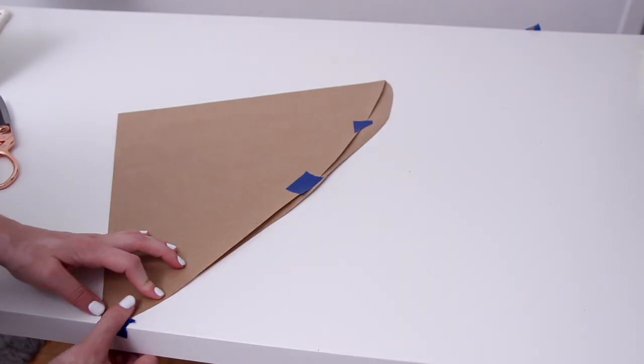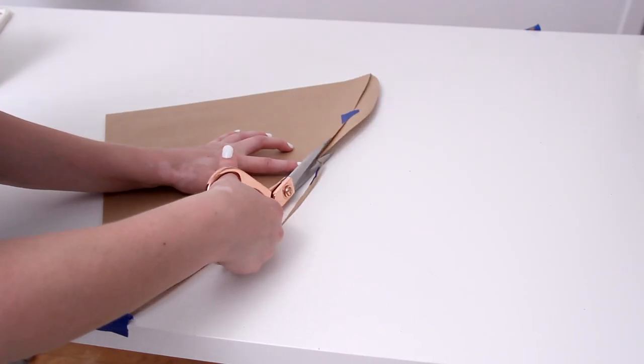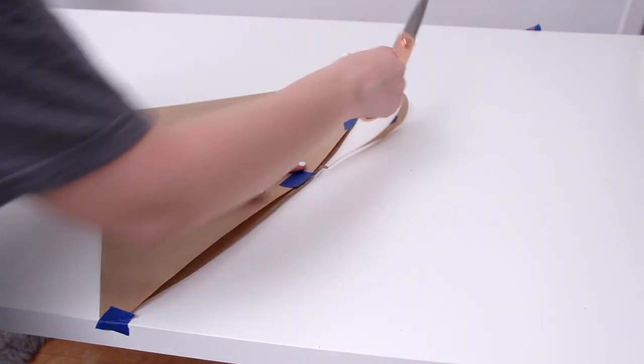So I just used a bit of painter's tape to tape it down to my table. And then I cut off that excess paper so that now both of my sides are equal.